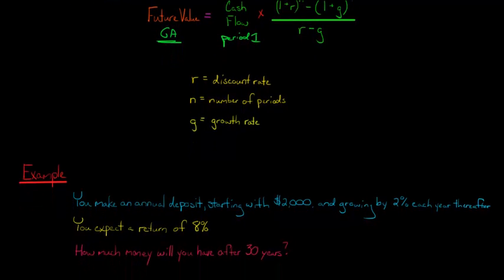It'll make it a little bit easier to kind of connect all the dots here. So let's do an example where we say, you want to save money for retirement. You're going to make an annual deposit, and the very first deposit you're going to make is going to be $2,000.